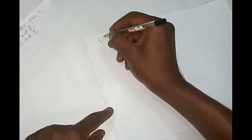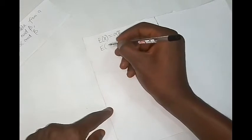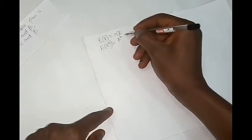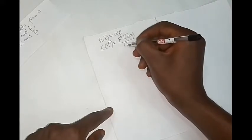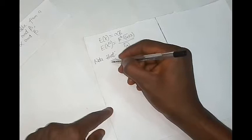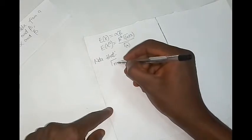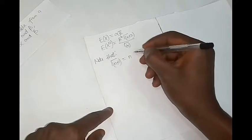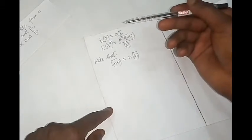First of all, let's write out what we've been given: the expected value of x is equal to alpha beta, and the expected value of x squared is equal to beta squared times the gamma function of alpha plus 2 over the gamma function of alpha. Note that the gamma function of n plus 1 is the same thing as n times the gamma function of n.